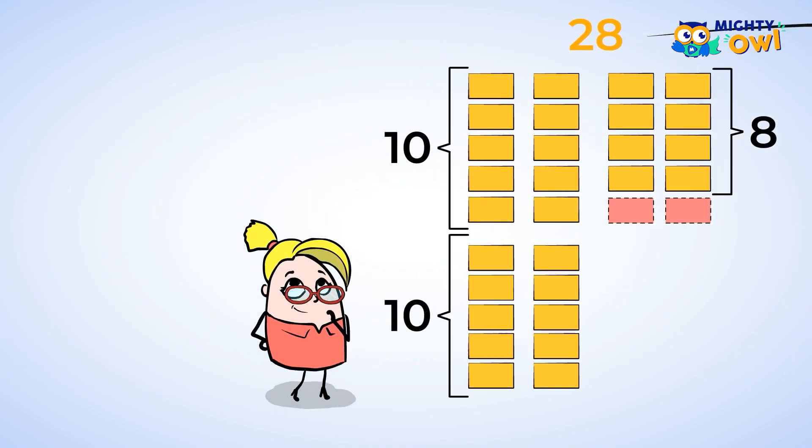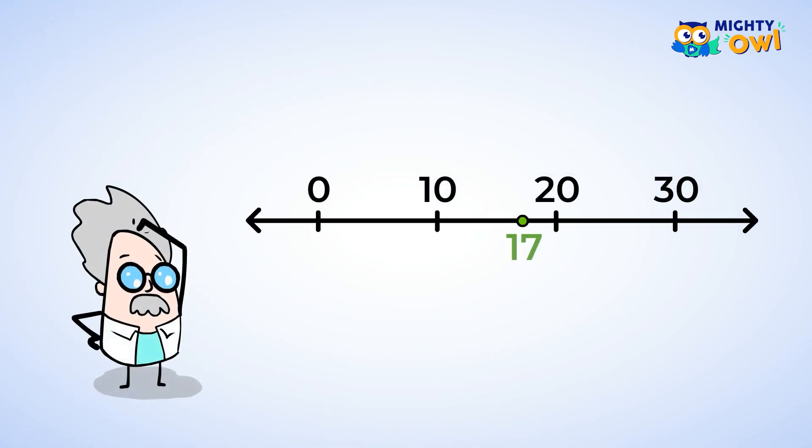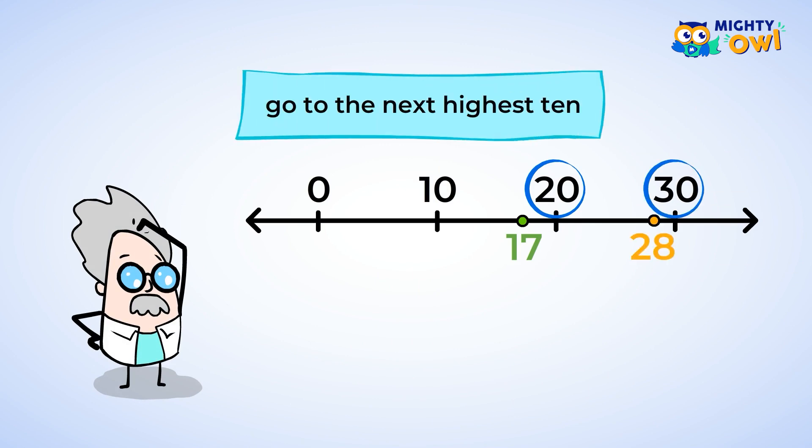Which means that the number 28 can be rounded to 30. So in other words, you could say that there are about 30 children in your class. 30 is a nice even number that's easy to visualize and work with. So far, you've rounded 17 to 20 and 28 to 30. In both of these examples, you go to the next highest 10. This is called rounding up.